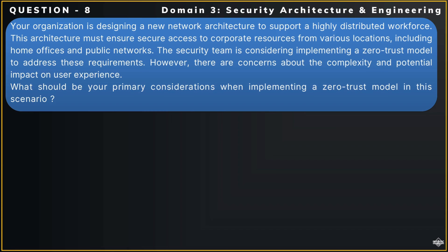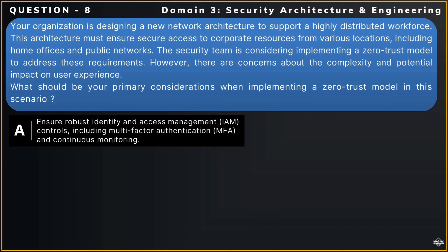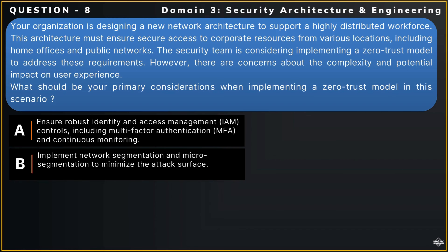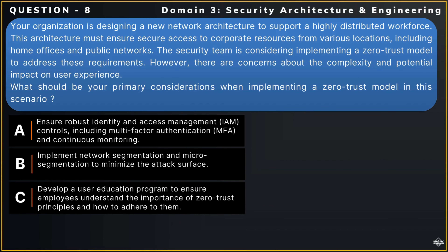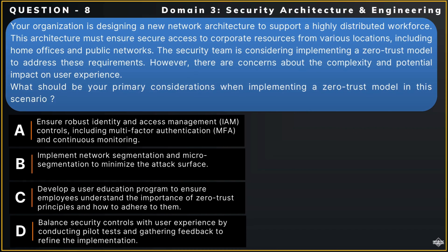Here are your options. Option A — Ensure robust identity and access management (IAM) controls, including multi-factor authentication (MFA) and continuous monitoring. Option B — Implement network segmentation and micro-segmentation to minimize the attack surface. Option C — Develop a user education program to ensure employees understand the importance of zero-trust principles and how to adhere to them. Option D — Balance security controls with user experience by conducting pilot tests and gathering feedback to refine the implementation.